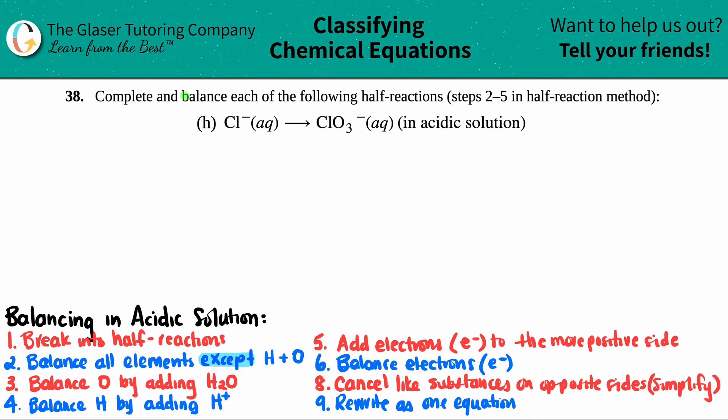Number 38, complete and balance each of the following half reactions, which is only steps two through five in the half reaction method of balancing redox reactions. In this case, we have to do letter H.